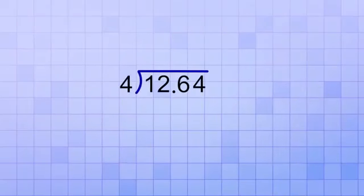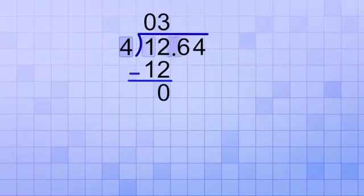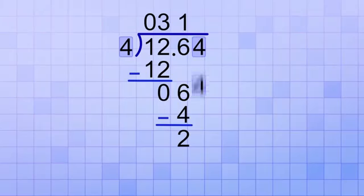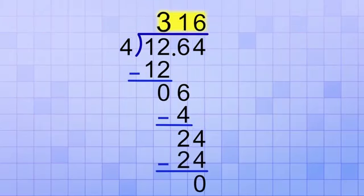So, if you have the division problem 12.64 divided by 4, you would follow the division procedure as if the decimal point was not even there and you'd get 3.16 in the answer line. But then you need to bring a copy of the decimal point straight up into the final answer making it 3.16.